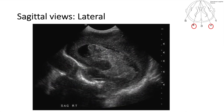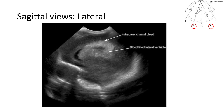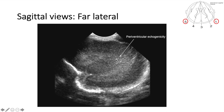When there is too much blood filling most of the ventricle, or if there is dilation in the ventricle, this is grade three IVH. Furthermore, when there is intraparenchymal bleed, this is what we call grade four IVH.